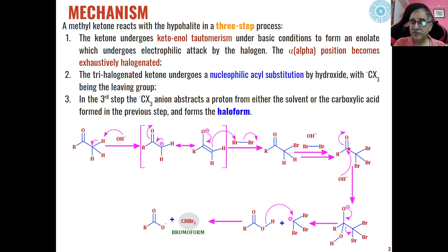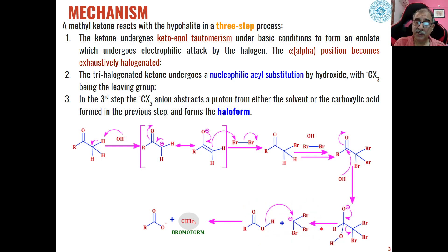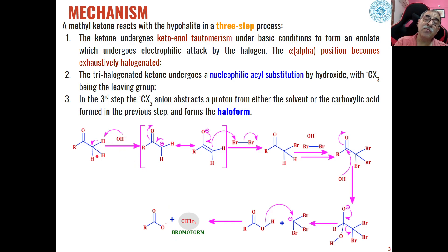Then the base will attack the carbonyl after the formation of this tri-bromo ketone, and this will be a nucleophilic addition across the carbonyl compound. We get an intermediate wherein the bromoform anion is eliminated with the breaking of the carbon-carbon bond. We get carboxylic acid, and this bromoform anion will abstract a proton from the carboxylic acid to give bromoform as the product. This is how bromoform is formed from methyl ketones.